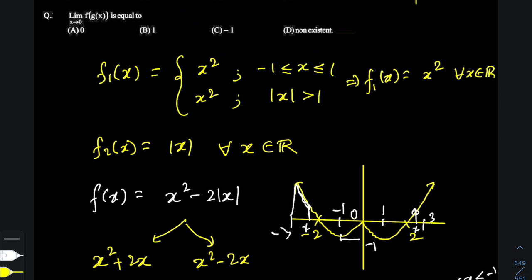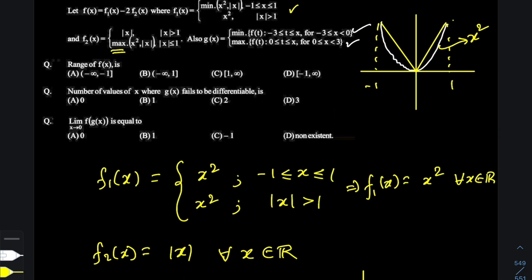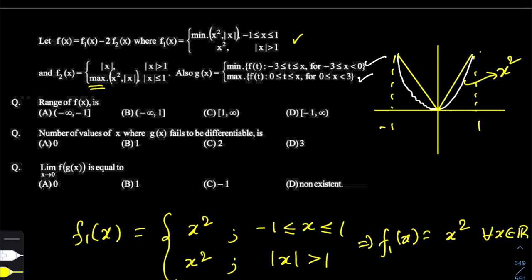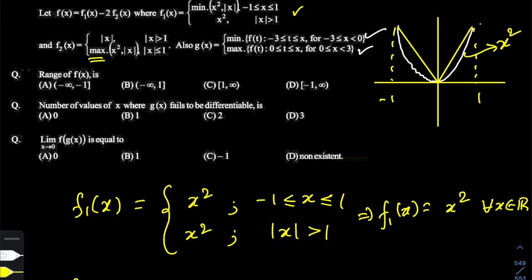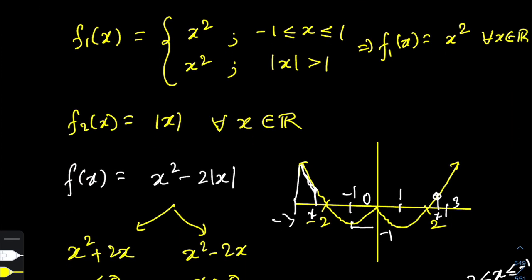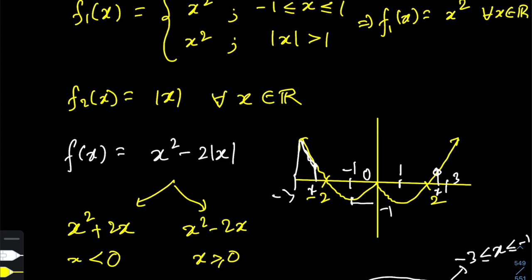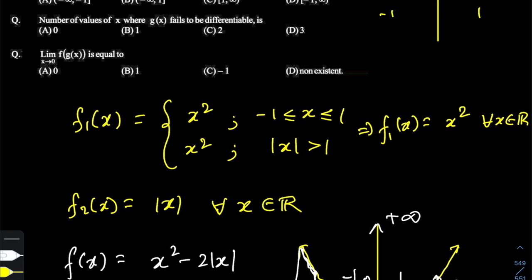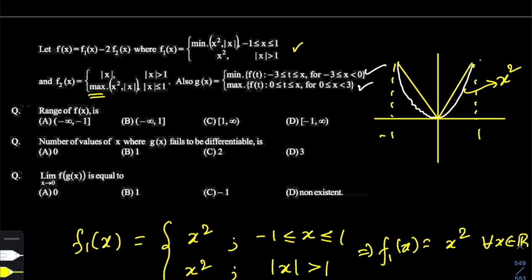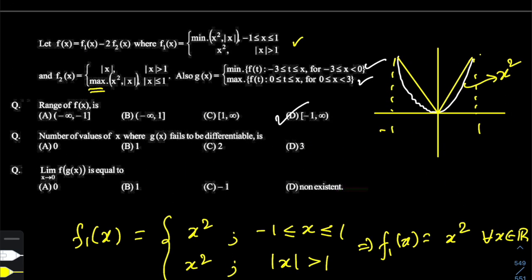After this analysis, we have finally found g(x). Now let's go to the questions. The first question asks: what is the range of f(x)? The range of f(x) can easily be read from its graph — the minimum value is −1 and it extends to plus infinity. So the range is [−1, +∞), which corresponds to option D.